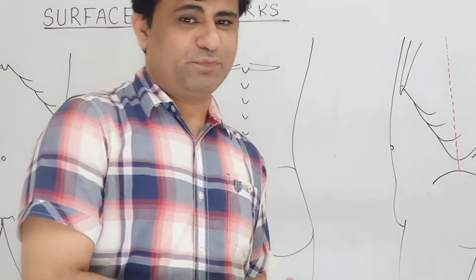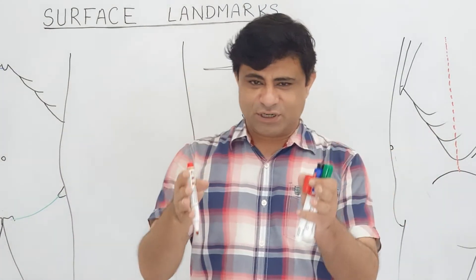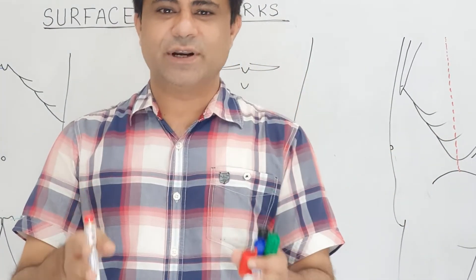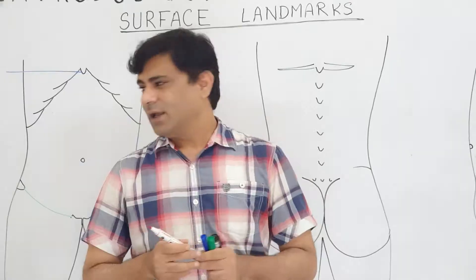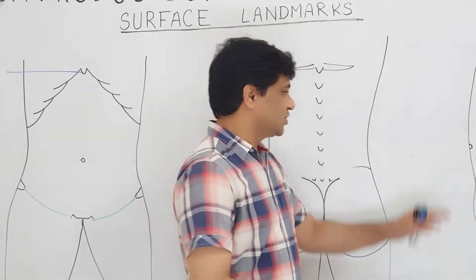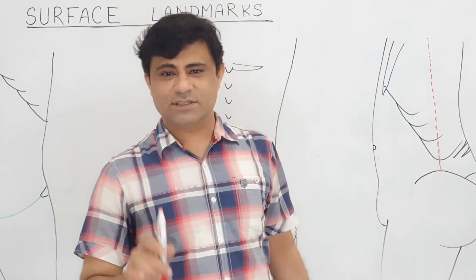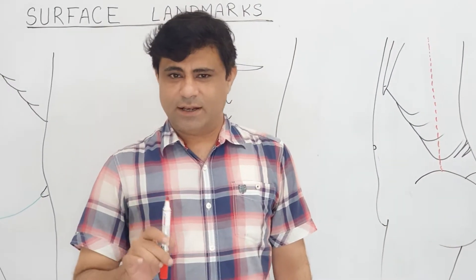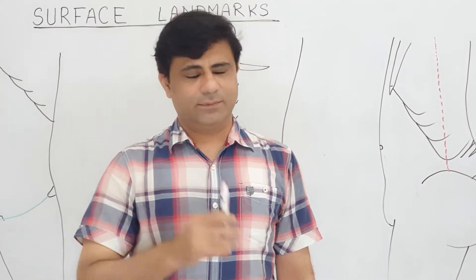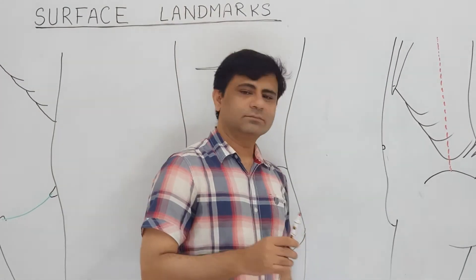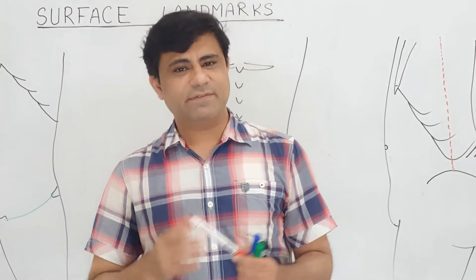If you bring out a rib cage from a skeleton and place it on a table, which rib will touch the table? The tenth rib. So in the mid-axillary line, the lowest lying rib is the tenth rib. Now for some other MCQs: the longest rib is the seventh rib.